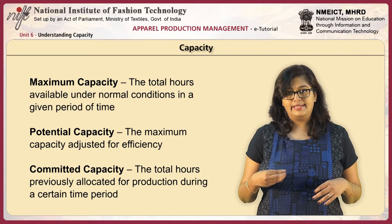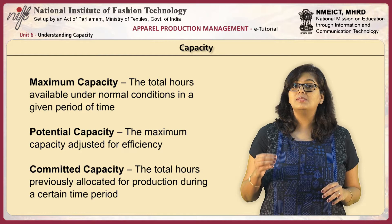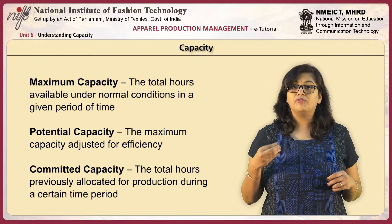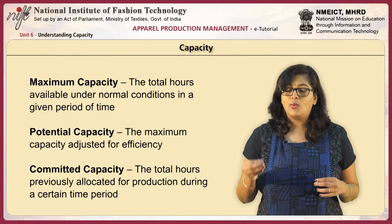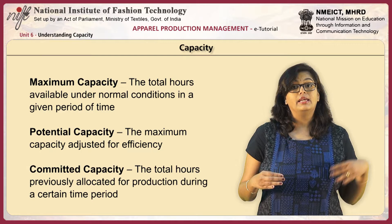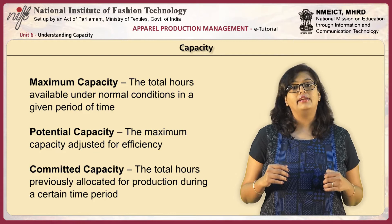Next comes potential capacity. Potential capacity is maximum capacity adjusted for efficiency. For example, if the maximum capacity for any given working day is 8 hours, and our efficiency of the factory is 90 percent, then the potential capacity is calculated based on the 90 percent for the given 8 hours.